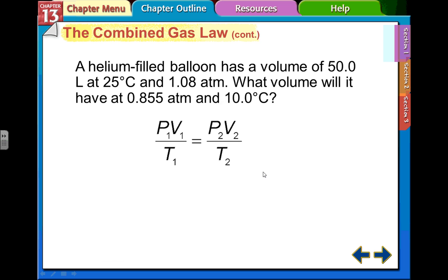So we have a little problem here. Helium filled balloon has a volume of 50 liters at 25 degrees C and this pressure, 1.08 atmospheres. What would the volume be if we change the pressure and the temperature?